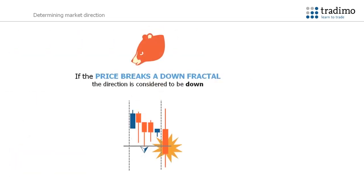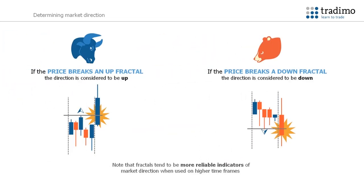And if price breaks a down fractal, then the market direction would be considered to be down, and you would only be looking for selling opportunities. It is important to note that fractals tend to be more reliable indicators of market direction when used on the higher time frames.